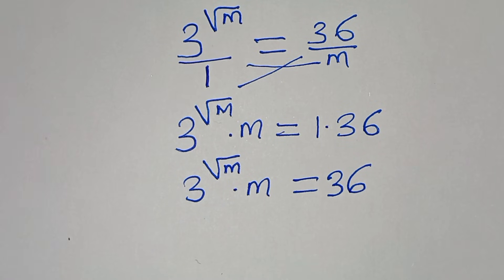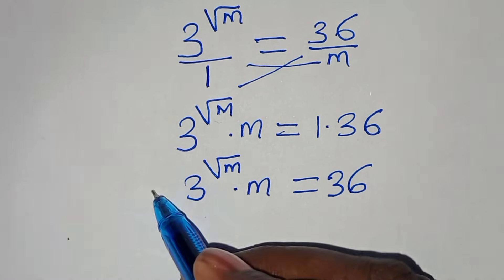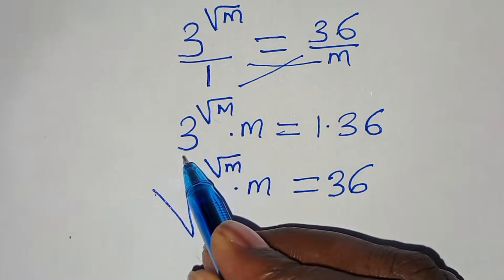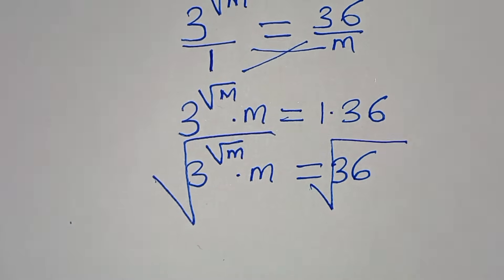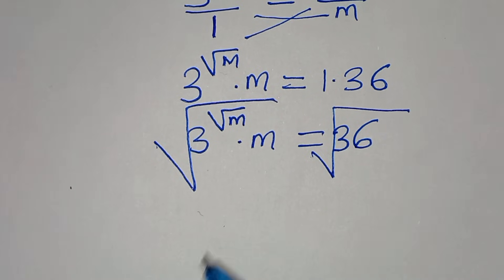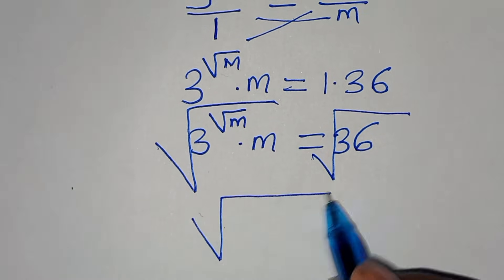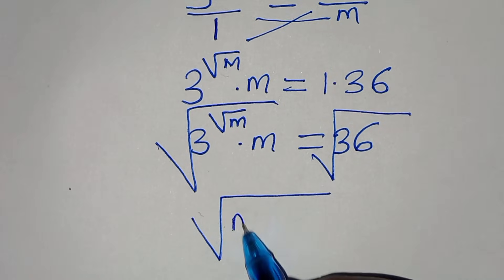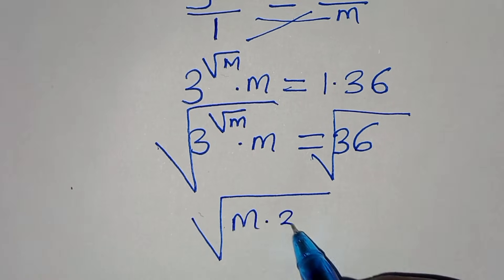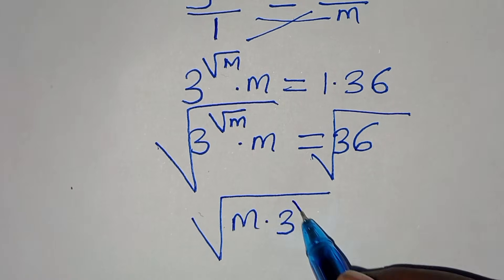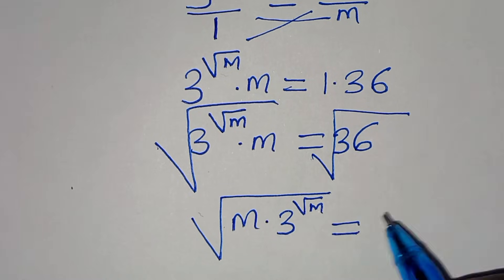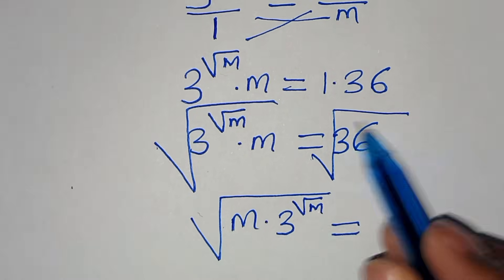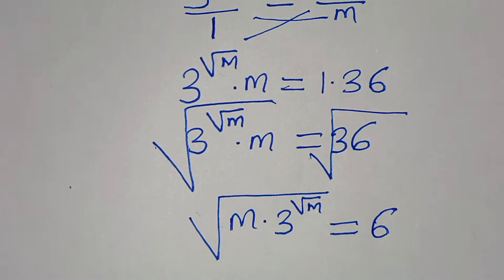Now the next step — let's introduce a square root on both sides, so that we have the square root of m multiplied by 3 to the power of square root of m, and this is equal to the square root of 36, which equals 6.